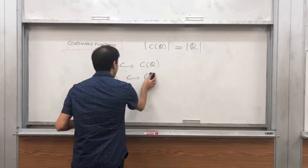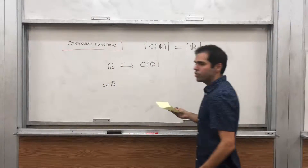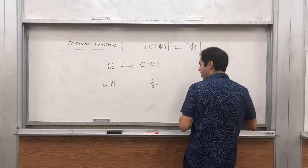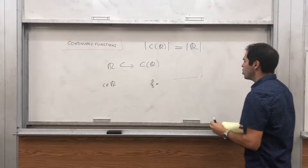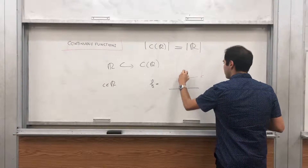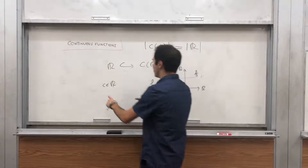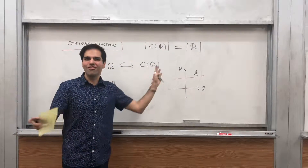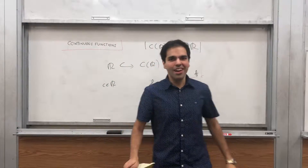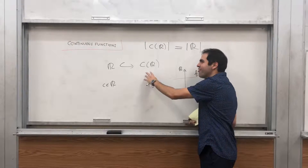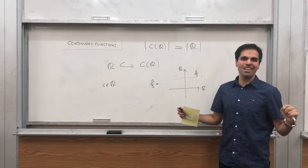First, let's show there are fewer real numbers than continuous functions — but that's not a big issue. If you have a real number C in ℝ, just let f be the constant function with constant value C. It is a continuous function from ℝ to ℝ. In particular, if you start with two different real numbers you get two different continuous functions, so this is a one-to-one mapping from real numbers to continuous functions. There are definitely more continuous functions than real numbers.